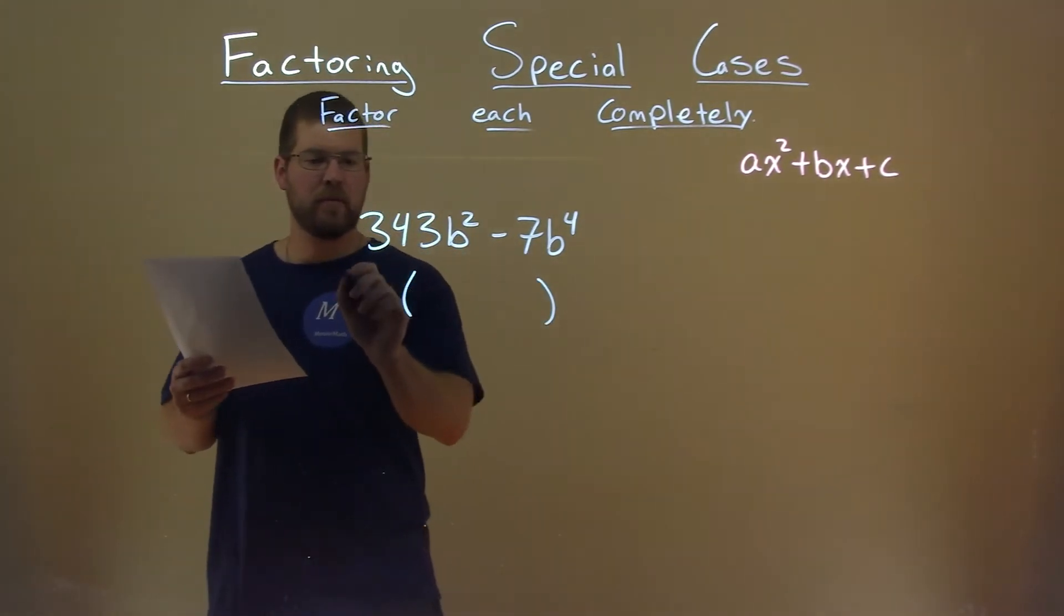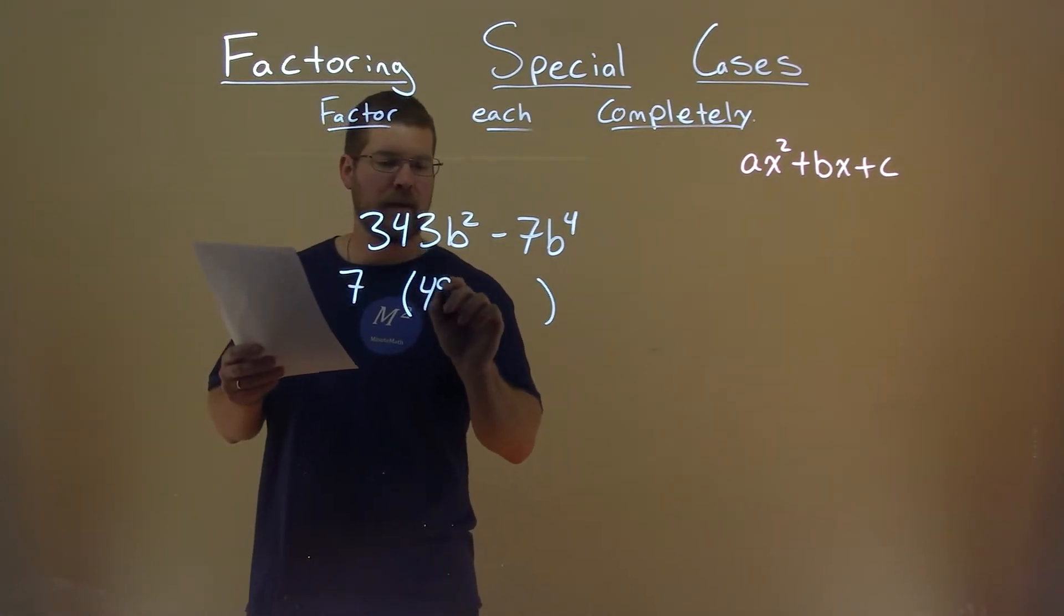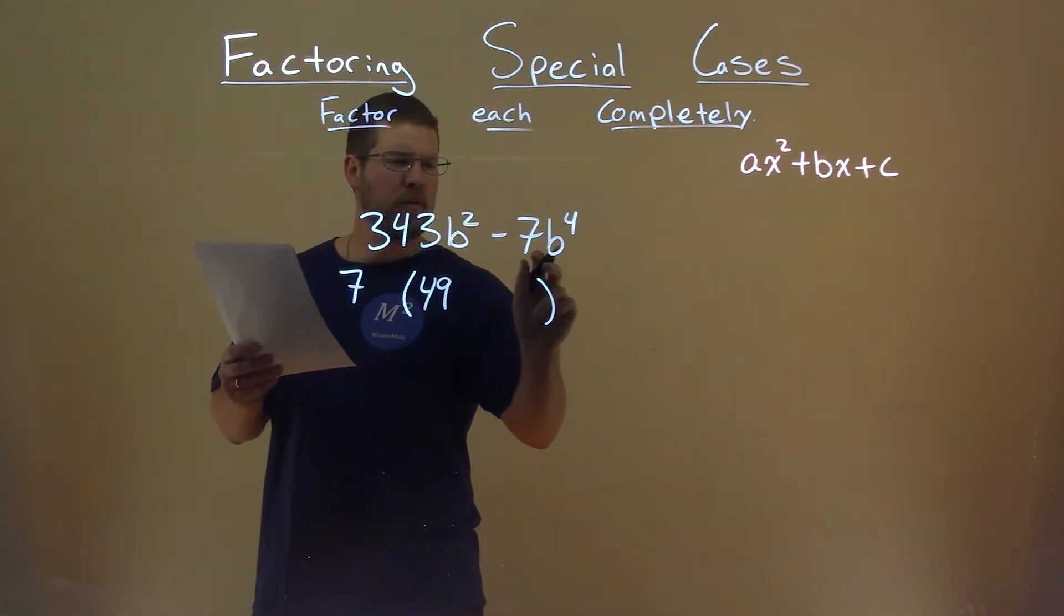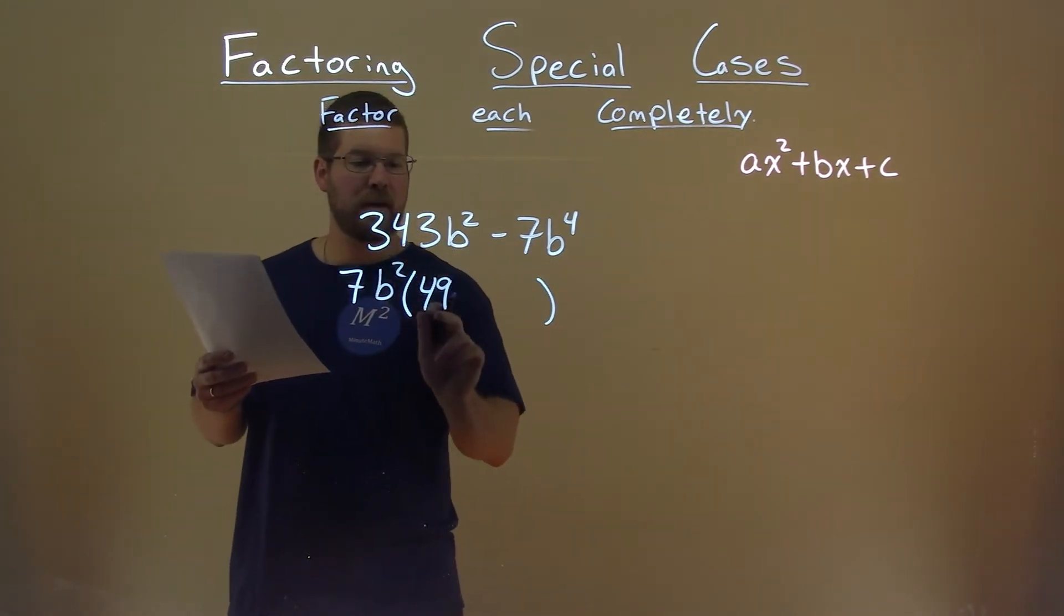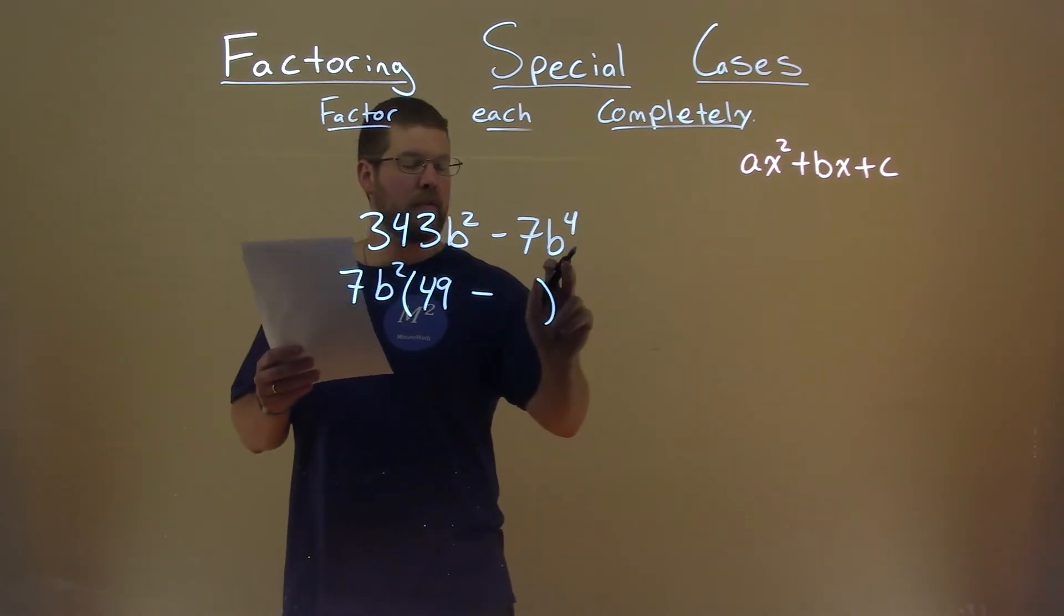If I pull out a 7 from both parts here, 343 divided by 7 is 49, but we also can pull out a b squared as well in both parts. So if I pull out a b squared, I'm left with just 49 here. If I pull out a 7b squared from the first part, I'm left with a b squared.